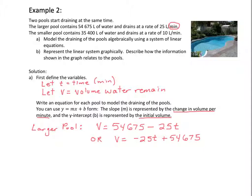Now, let's write an equation for the smaller pool. The smaller pool has whatever its volume is, and it started at 35,400 liters and is decreasing at a rate of 10 liters per minute. So, 10 times the number of minutes will tell you how much it's decreased by. You can also write this equation with the slope first. So, we can write it as volume is equal to negative 10 times T plus the initial volume of 35,400.